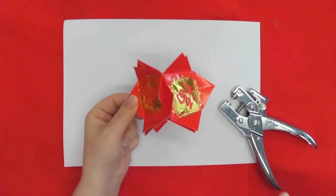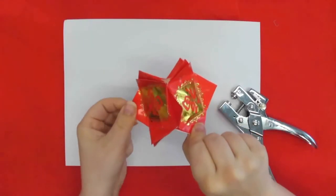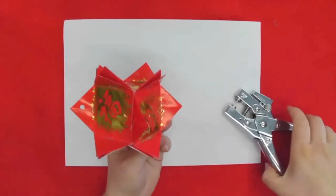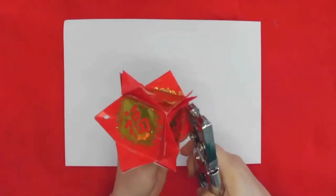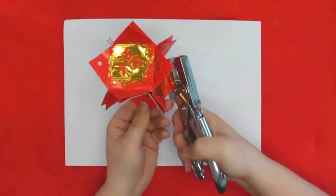Okay, next we are going to poke two holes. Use your hole punch, try to make it more in the middle of each triangle as best you can.